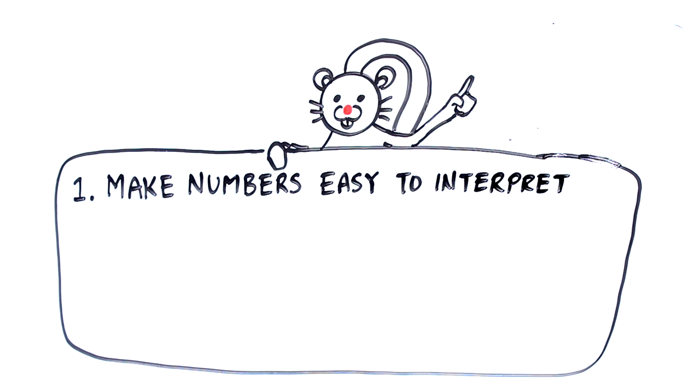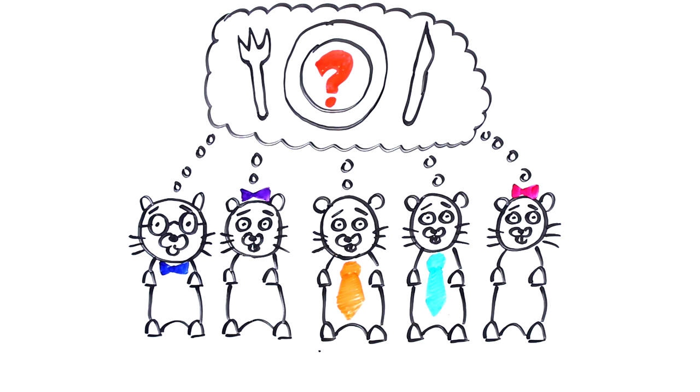To make numbers easy to interpret, she says it is important to avoid any potential framing bias. For example, her friend told people that if the fungus arrived, there was about a 1 in 4 chance that they'd all have nothing to eat. By mentioning the negative aspect here, it was framed in a negative way.